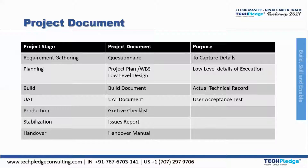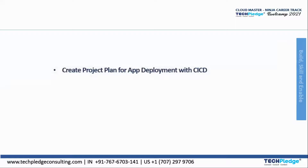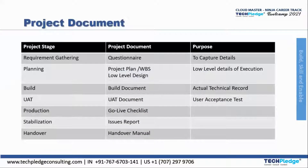After planning, the build stage comes into picture, where a build document is created containing the actual technical records. That is the purpose of the build document. After that comes UAT — User Acceptance Testing — where a UAT document is provided for the project.